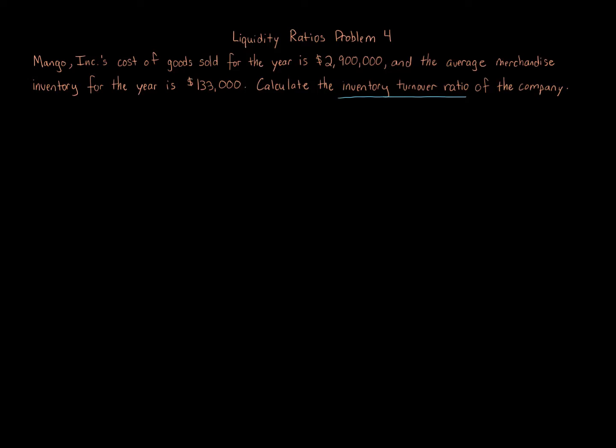There are two ratios in inventory analysis, and we're looking at a company's ability to manage its inventory effectively. The two different ratios are the inventory turnover ratio and the number of days sales in inventory. The number of days sales in inventory is ultimately the more important of the two because it actually takes into account the inventory turnover ratio itself.